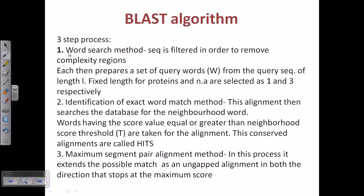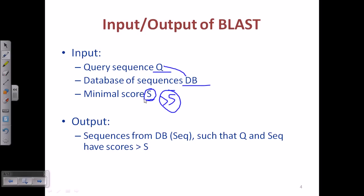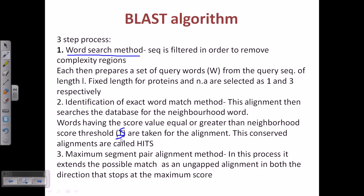The BLAST algorithm is divided into three different steps. First is the word search method: the sequence is filtered to remove low-complexity regions and get exact matches of the query sequence with the database sequence. Second is the identification of exact words and the alignment of the searches, taking matches with values greater than the score threshold, designated as T or S.